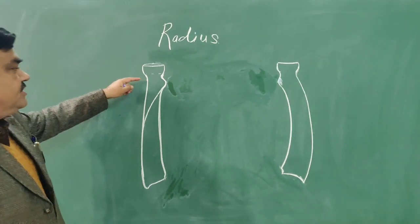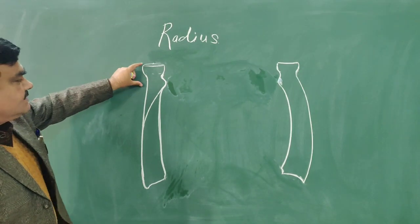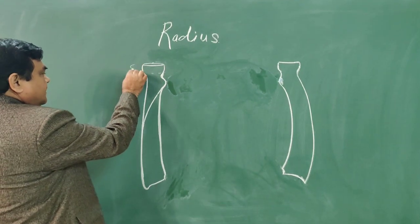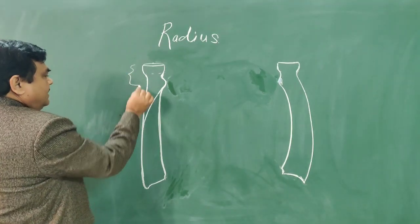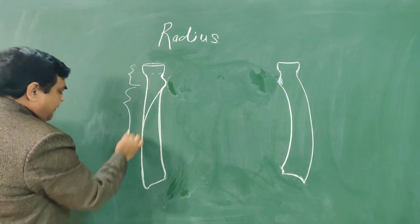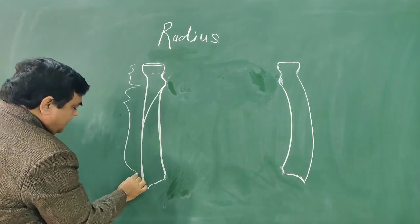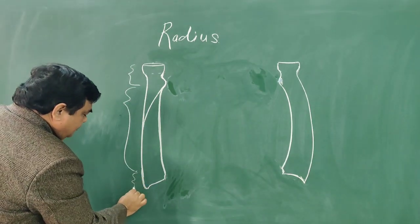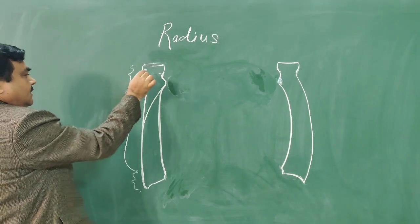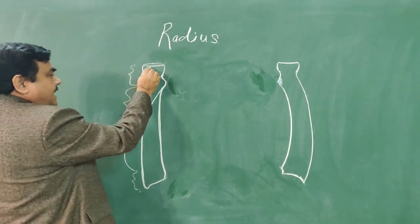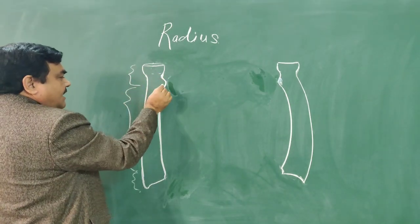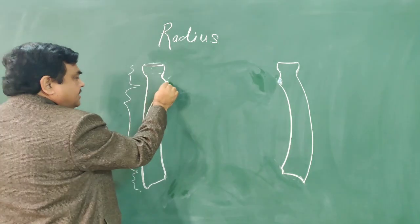This bone is divided into three parts: the upper part, the middle part, and the lower part. The upper part includes the head, neck, and tuberosity.